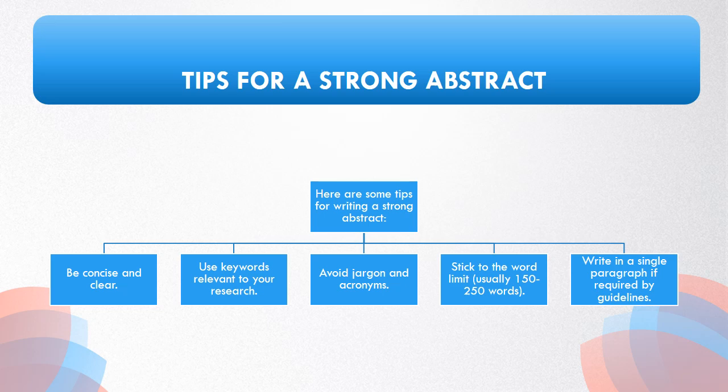Here are tips for crafting a strong abstract. Be concise and clear, incorporating relevant keywords. Avoid jargon and acronyms to enhance readability. Adhere to the specified word limit and format requirements, often a single paragraph. These strategies ensure your abstract is impactful and accessible, guiding readers to grasp the essence of your research quickly and accurately.